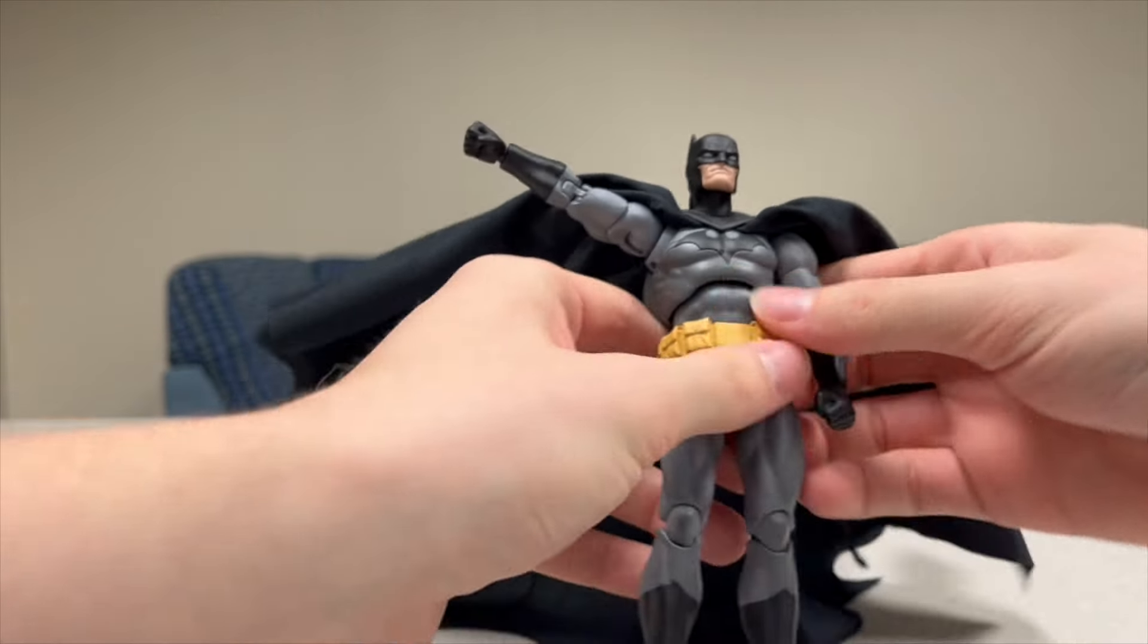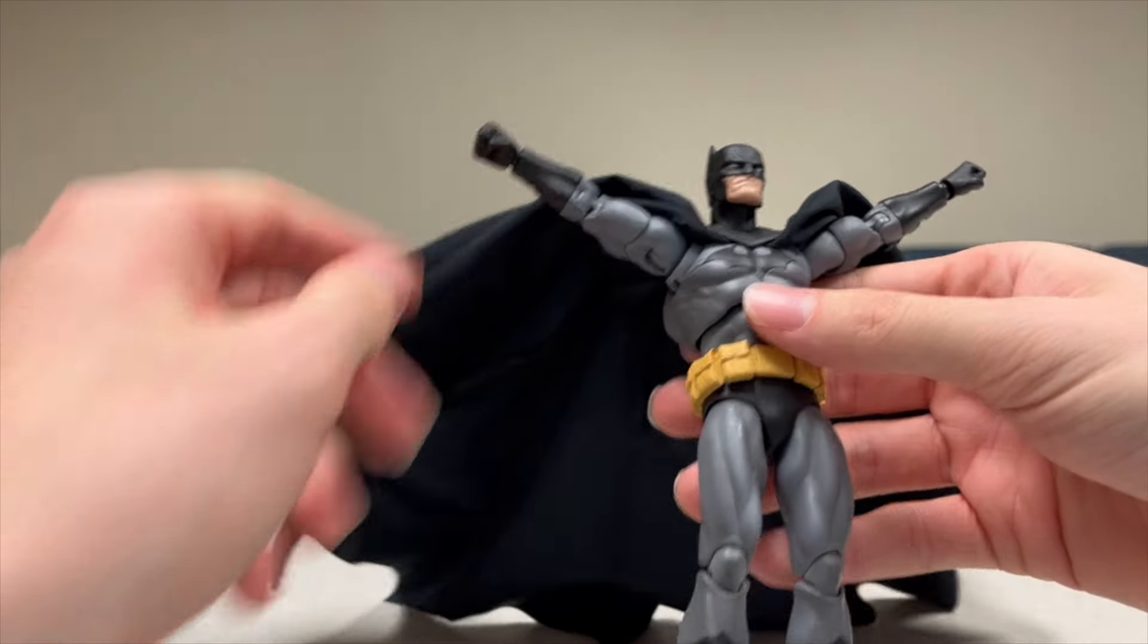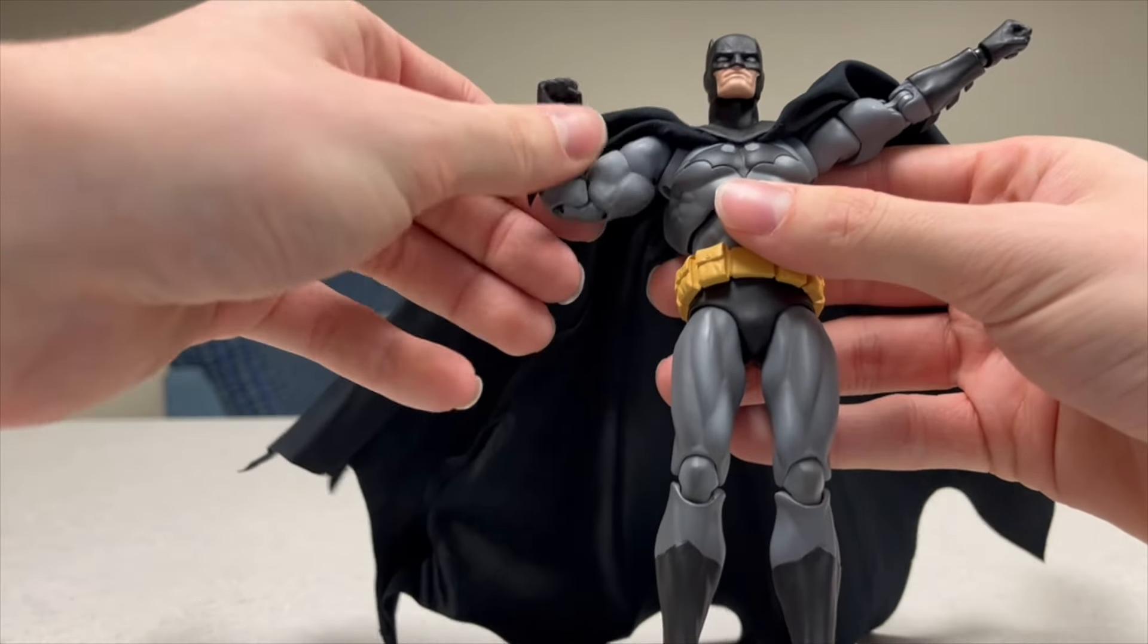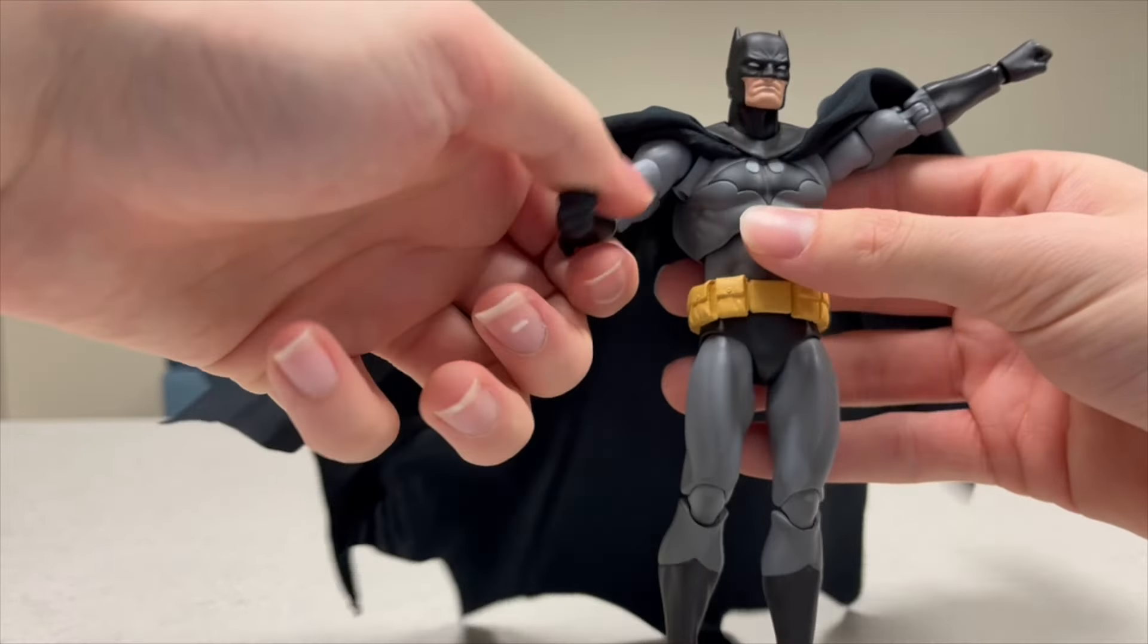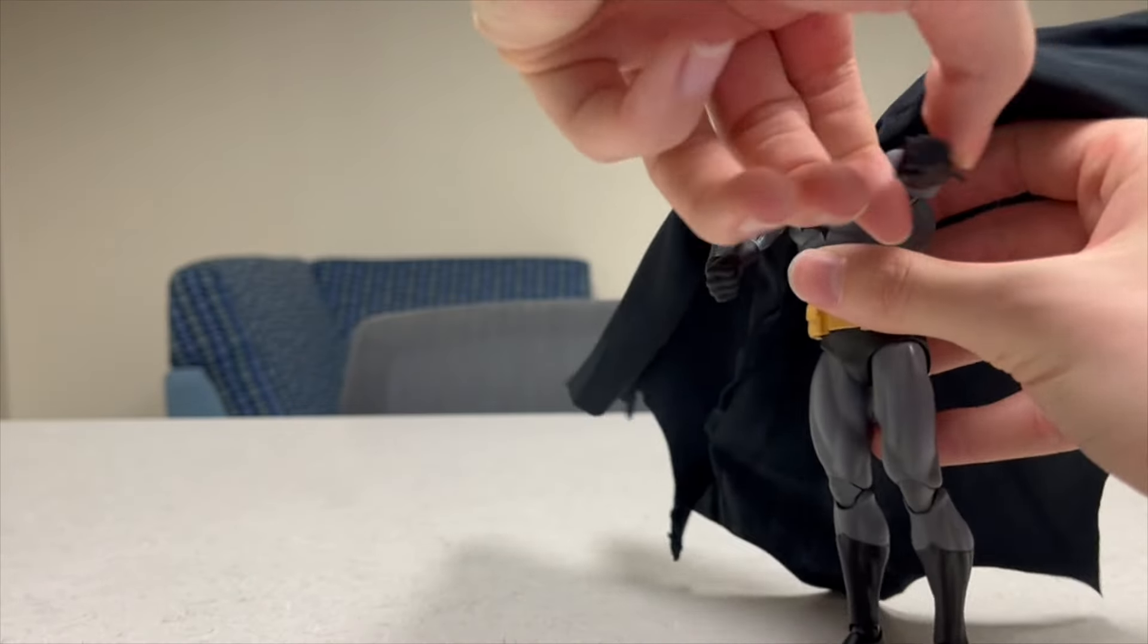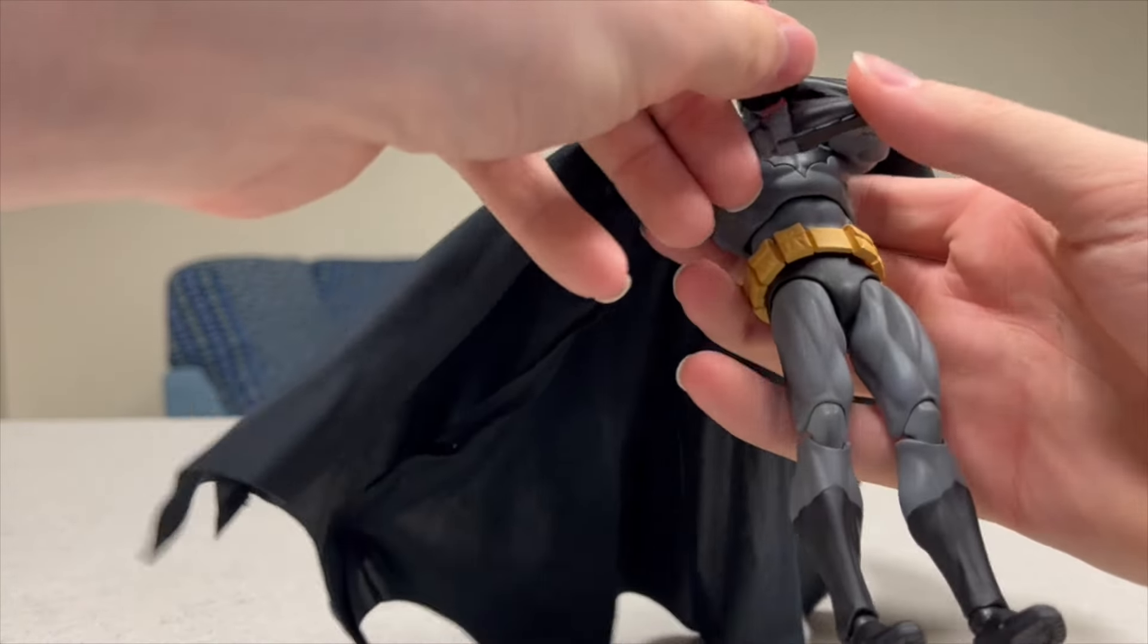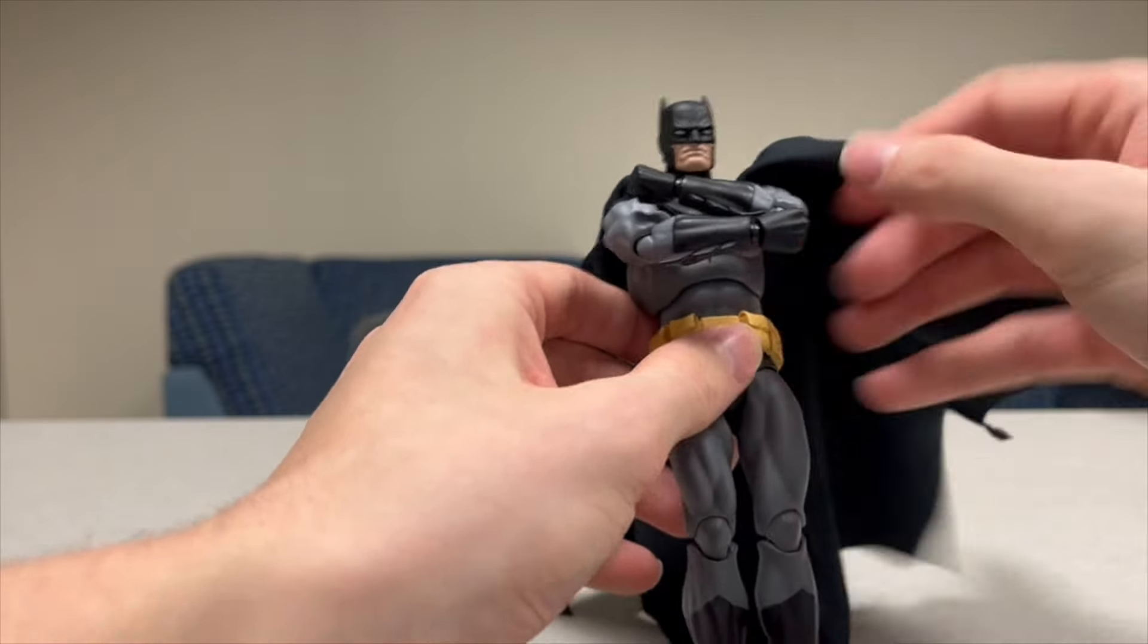Arms can move up pretty far. He can T-pose and then some, which is pretty great. It's kind of hindered by the cape, but not really because you can just move the cape out of the way. Double bend at the bicep, swivel, hand swivel or rotation 360, whatever you call this. Butterfly joints allow him to move his arms out pretty freaking far. Like, he can definitely cross his arms pretty easily. Obviously, there's going to be some gapping, but luckily you have a cape for that.